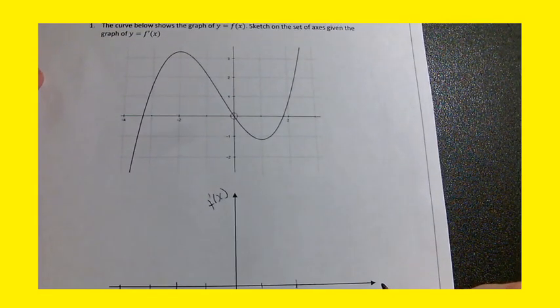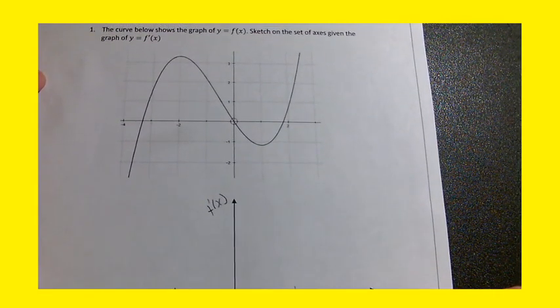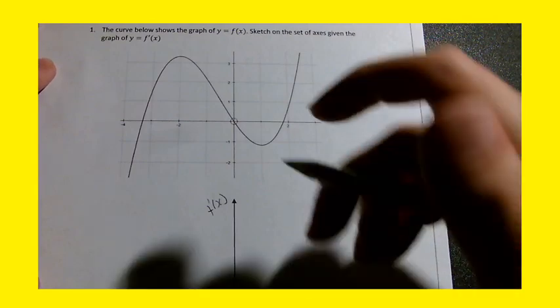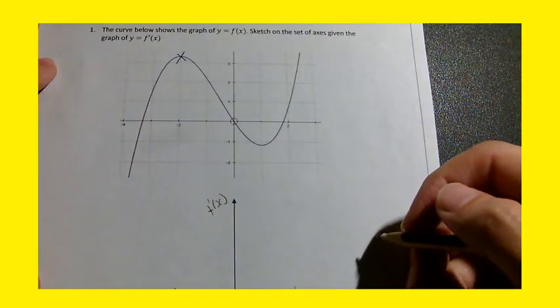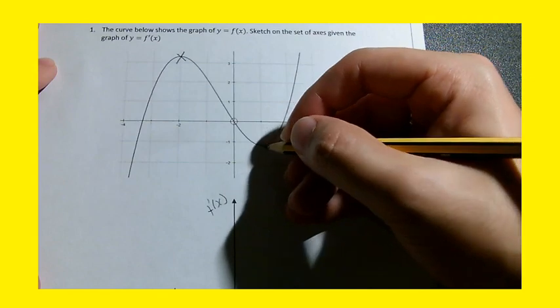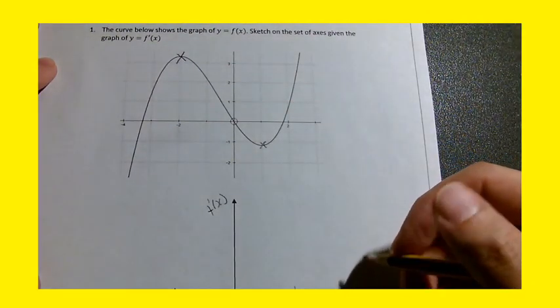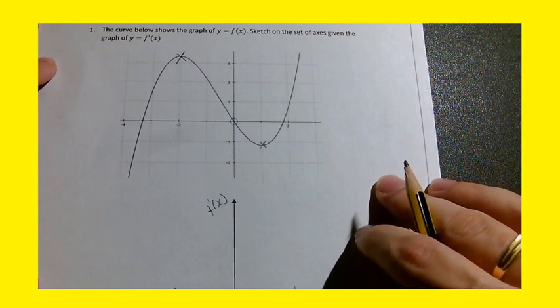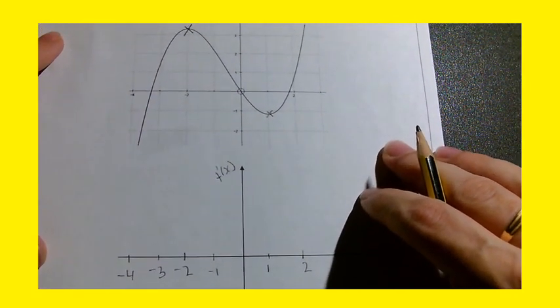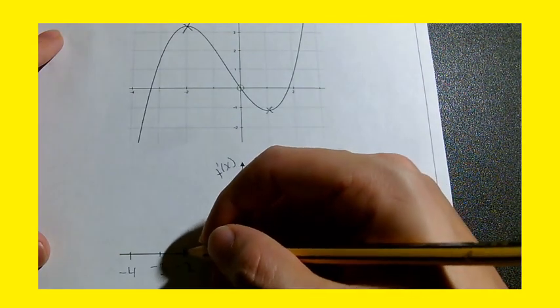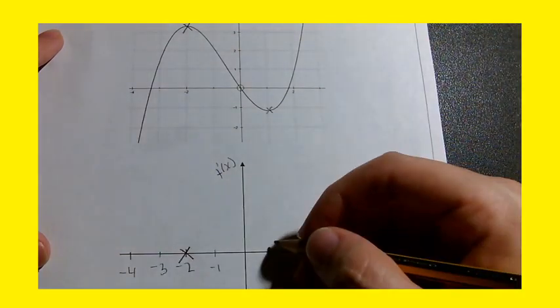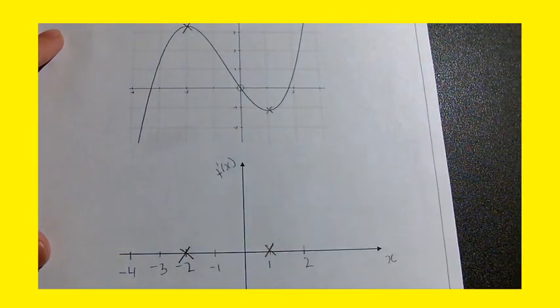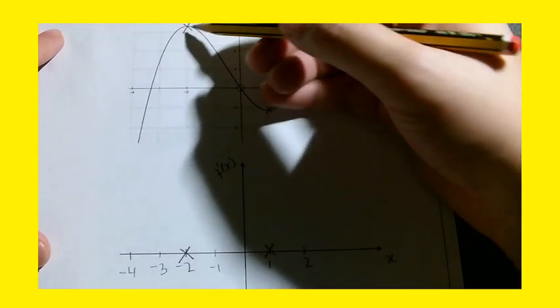First things first, what I'm going to try and analyse is is there any maximums or minimums? Well, there's one maximum here at minus 2 and there's one minimum here at 1. What I can immediately do is because I know the value of the gradient at those points is equal to 0, I can just have those x-intercepts. At minus 2, I've got an x-intercept there and 1, I've got an x-intercept here. I'm literally matching it up.